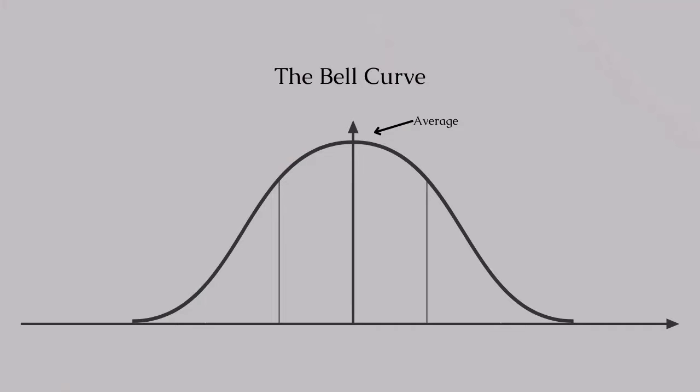Now, let's consider the impact of the bell curve in a school setting. Imagine we're analyzing scores of high school students on a national math exam. When plotted on a graph, we notice a classic bell curve. The peak represents the average score — those scoring close to this are in the majority — and as we move away from the mean in either direction, higher or lower scores, the number of students decreases.